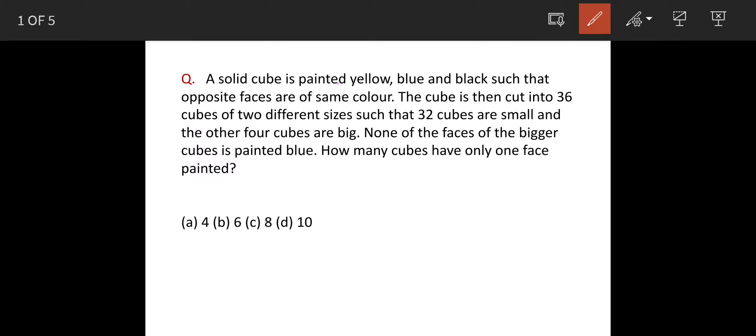The question is: A solid cube is painted yellow, blue and black. So this is a cube painted in three colors. If this is yellow, then yellow is on the opposite side, and in this manner all the colors are on opposite faces.